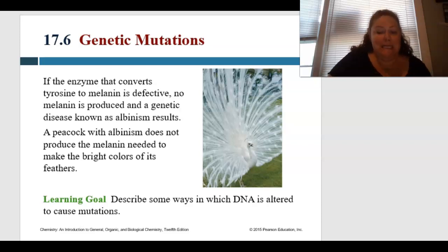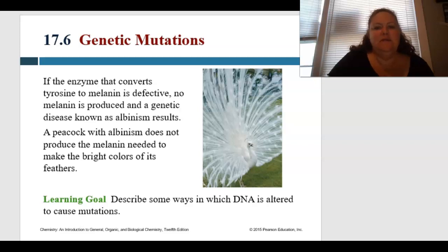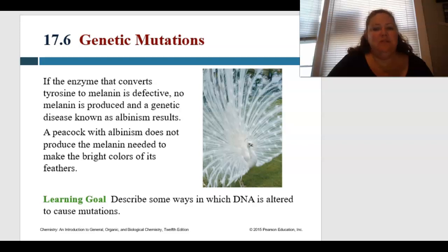So what happens when things go wrong? This would be genetic mutations. If the enzyme that converts tyrosine to melanin is defective, no melanin is produced and the genetic result is known as albinism. So a peacock with albinism does not produce the melanin needed to make the bright colors of its feathers.